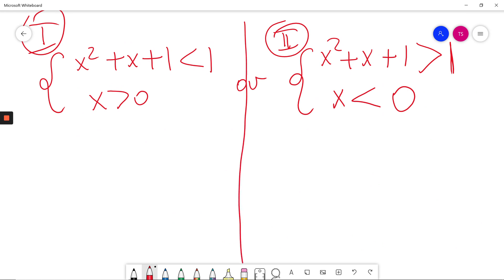So if I have x² + x + 1 < 1, this is the same as x² + x < 0. I subtracted 1 on both sides.